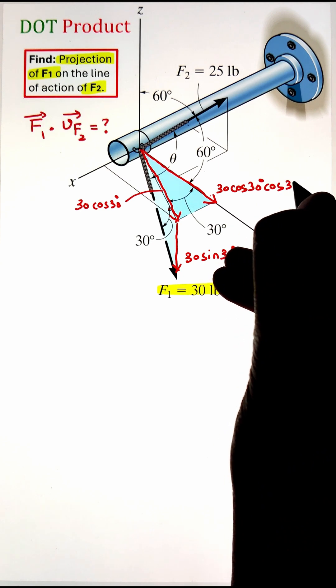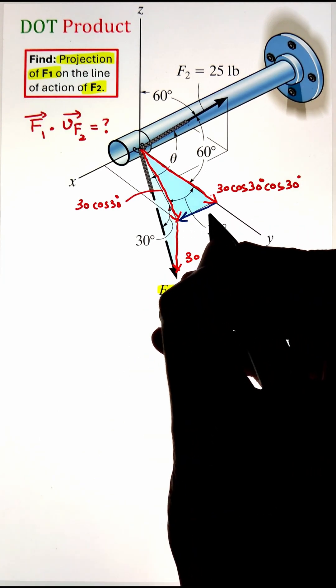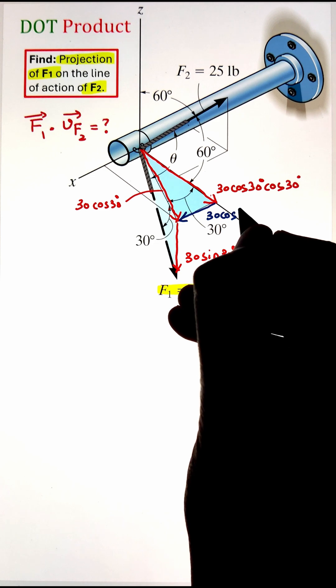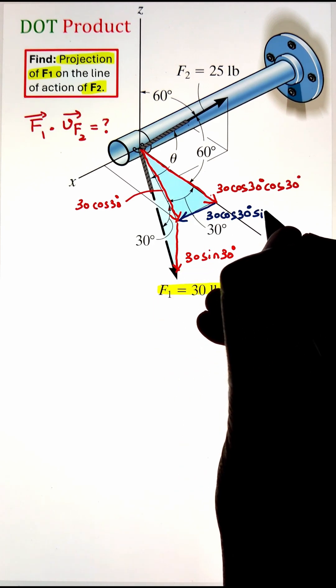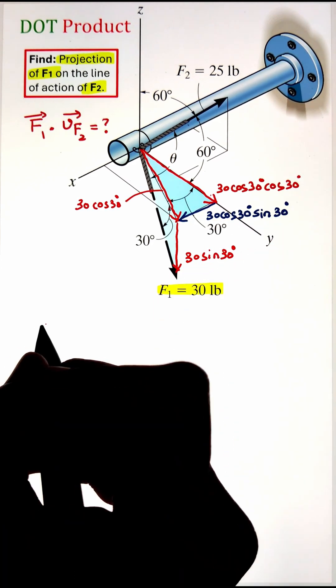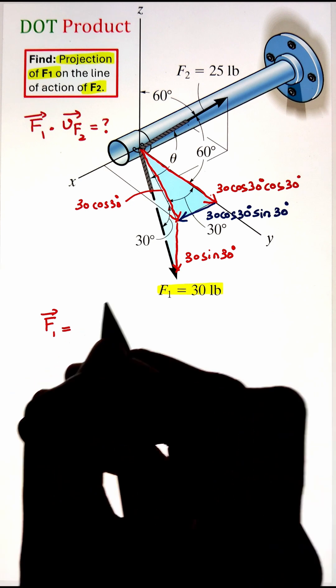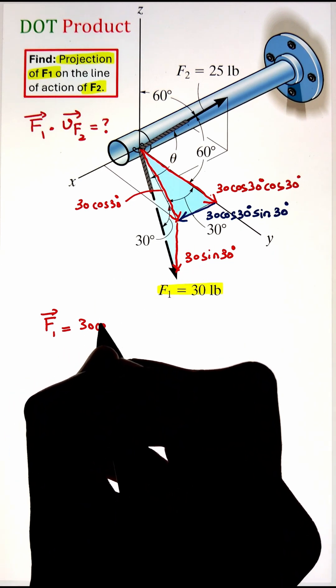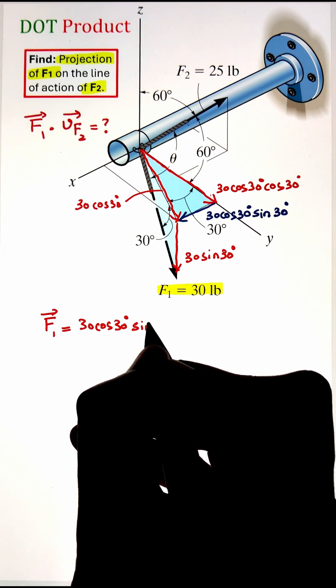Now the 30 cosine 30 vector needs to be further resolved along the x and y component, meaning that if we take the cosine 30 of this vector, it will project it along the y axis, whereas the sine 30 is going to project it along the x direction.